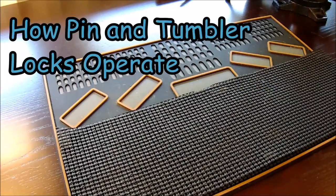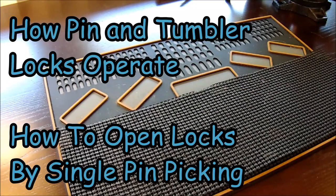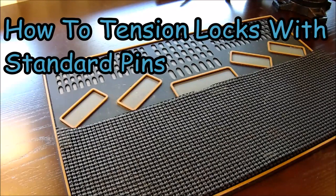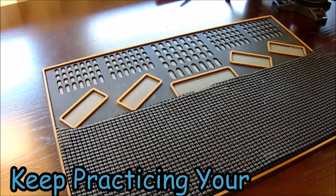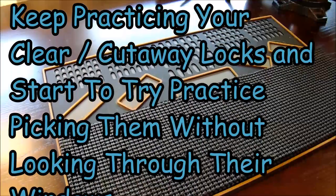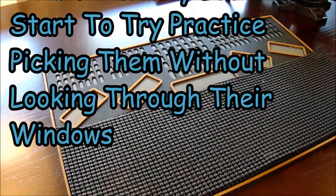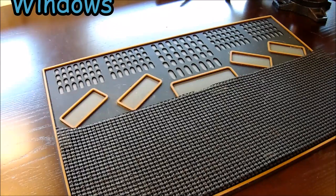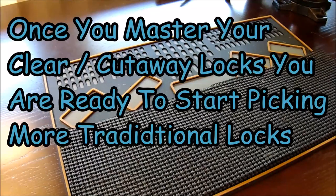So far, we've gone over how locks operate, how to open them by single pin picking, the different pin states that can be presented to you while picking, and some tensioning considerations for locks with standard pins. In order to start moving forward, what you should do is keep practicing your clear plastic locks and your cutaway locks until you can start getting them consistently without looking through the window. And once you can do that, you'll be ready to start moving on to some more traditional locks.